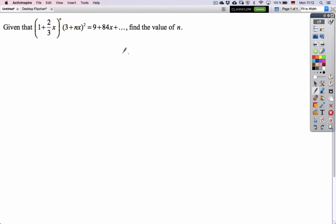In this example we're looking at a binomial expansion, but we've got it happening to the power of n here, and there's an n sitting here. So this was quite a challenging problem, and we need a 9 or an 84x as our only clues.